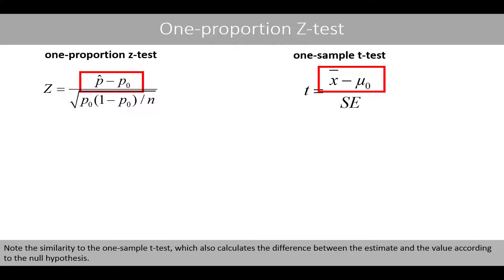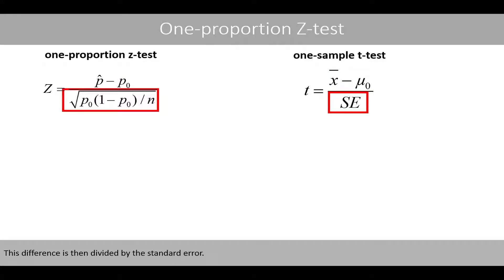Note the similarity to the one-sample T-test, which also calculates the difference between the estimate and the value according to the null hypothesis. This difference is then divided by the standard error.